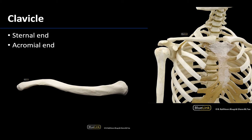There is a sternal or medial end, which I typically describe as being more bulbous. It looks a little bit more circular, and as its name would suggest, it's going to articulate with the sternum.